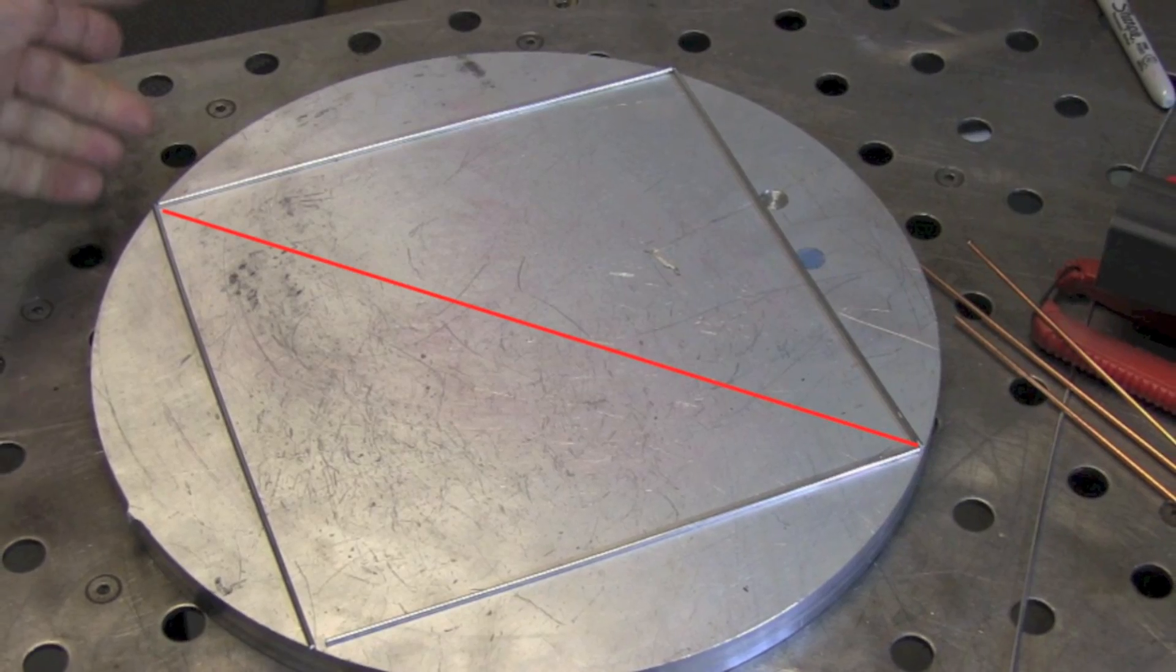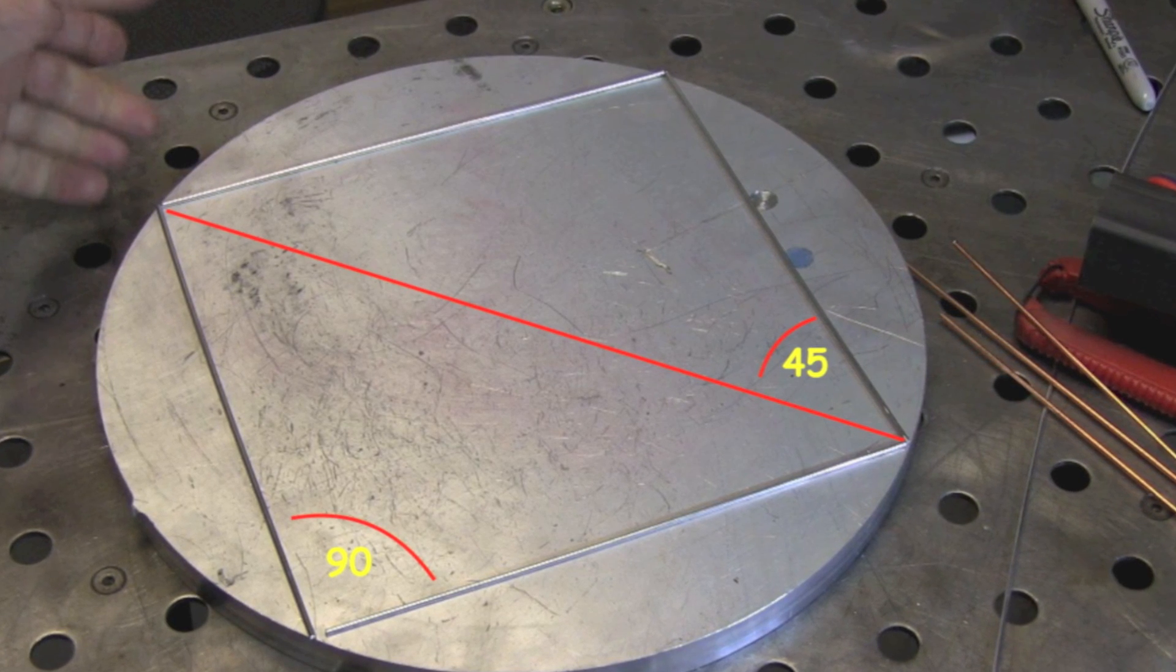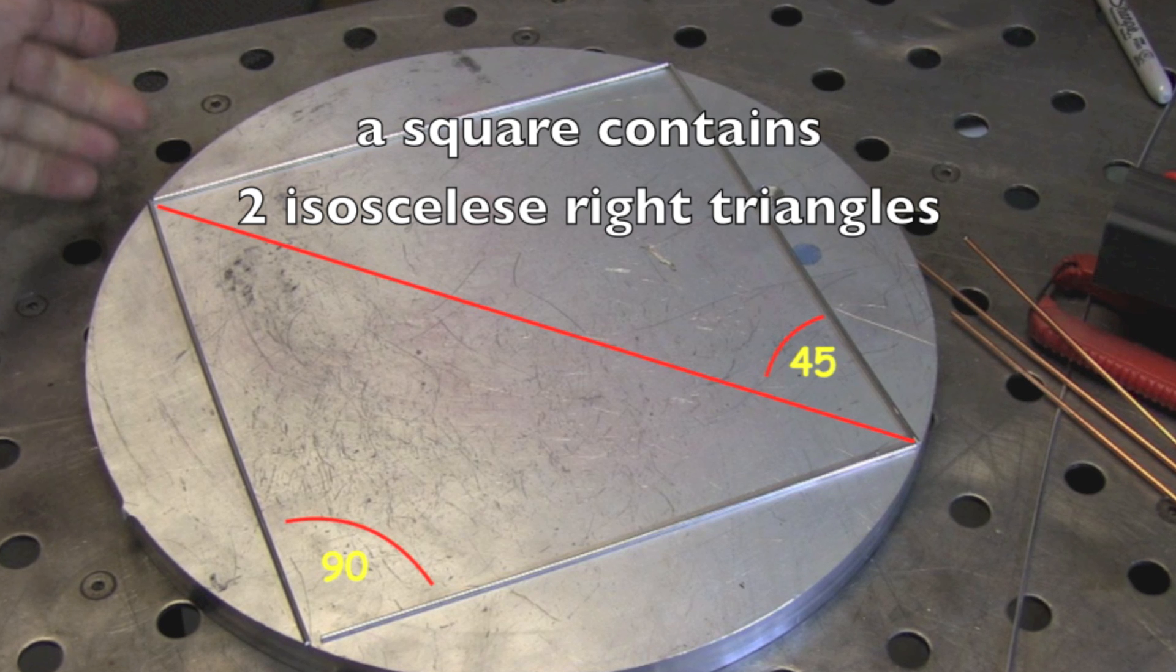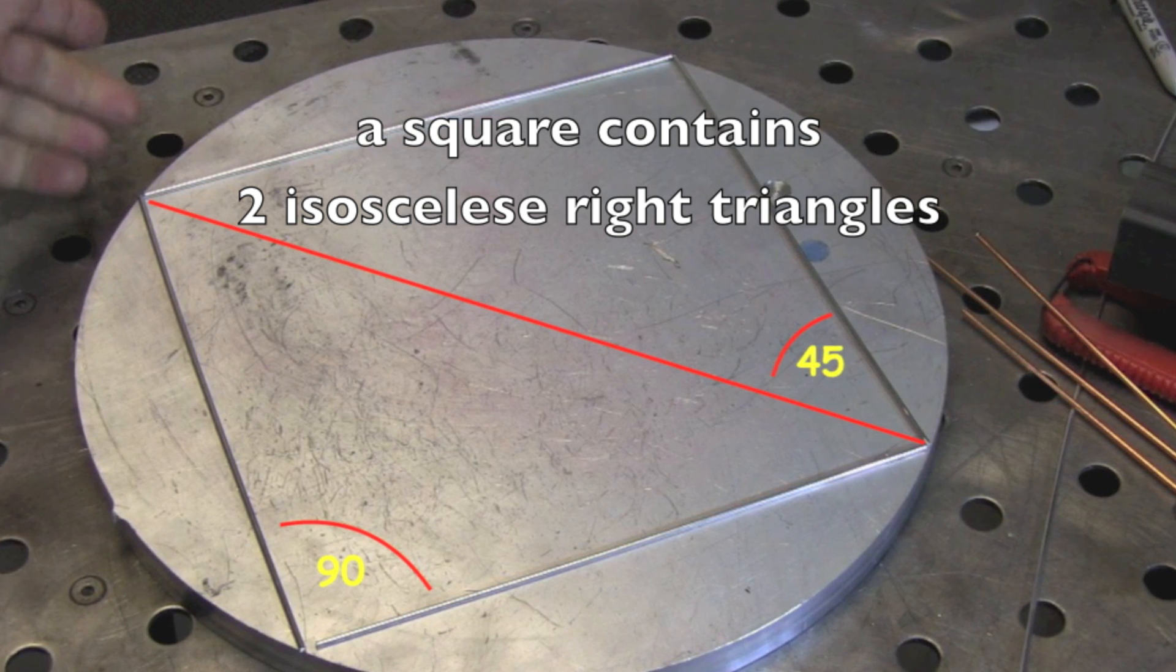This line right here that divides those two triangles that make up the square is a hypotenuse of those triangles, which also happens to be the diameter of the round piece. We already know the hypotenuse of that triangle.